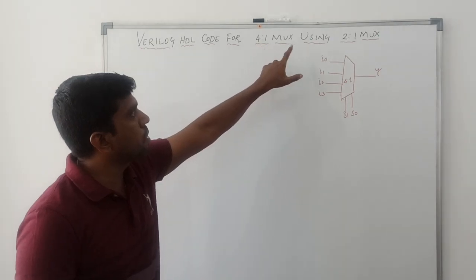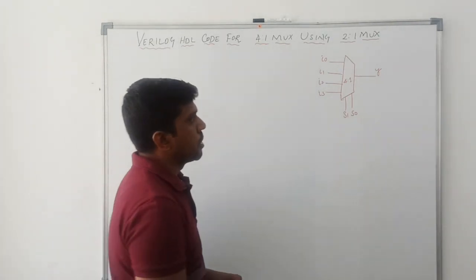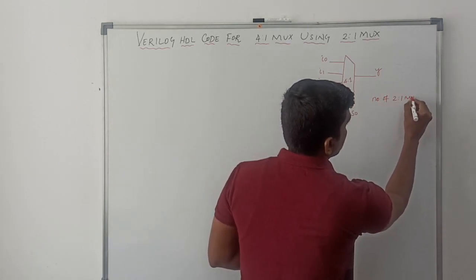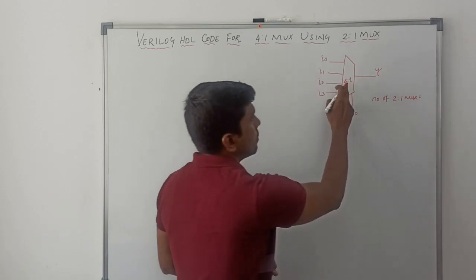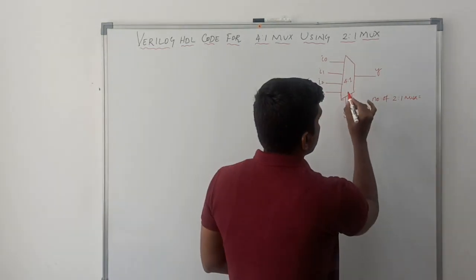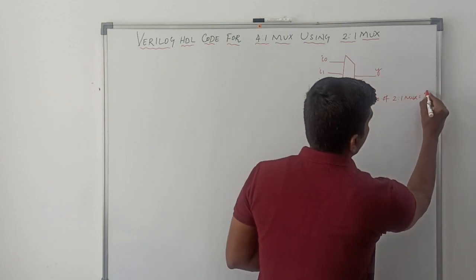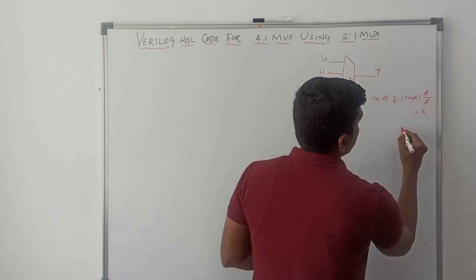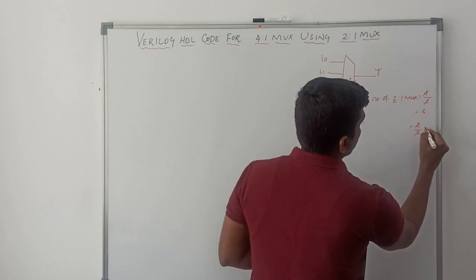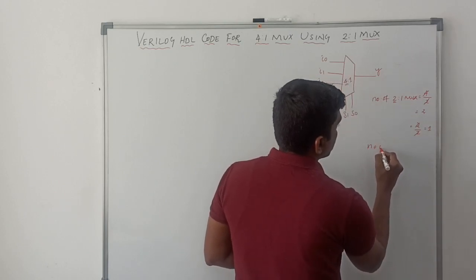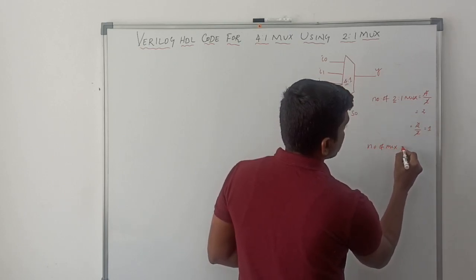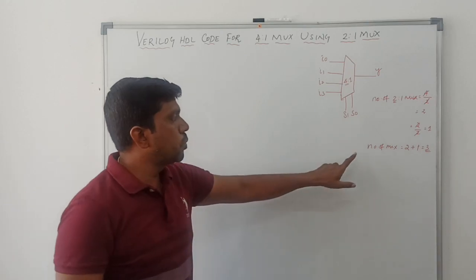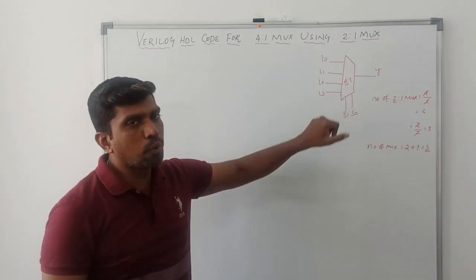I am going to design a 4-to-1 mux using 2-to-1 mux. First, I find the number of 2-to-1 muxes required to design a 4-to-1 mux. It is a simple trick: 4 divided by 2 gives 2, then 2 divided by 2 gives 1. So the number of 2-to-1 muxes is equal to 2 plus 1, which is 3.